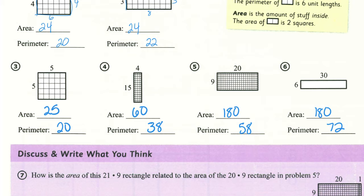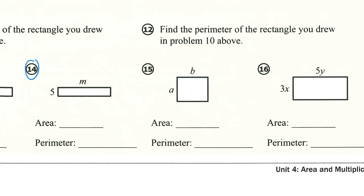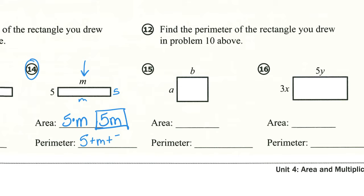Check your work on three through six to make sure that you got all those areas and perimeters correct. If you have questions, make sure you're asking. Now we're going to start with number 14. We have a variable here instead of the length of that side, but the process is still going to be the same. I'm going to take five times m to get the area, or in math we usually just write it as 5m — when those things are right beside each other, it means they're being multiplied. For my perimeter, I'm going to write it as five plus m plus five plus m, but I'm going to simplify it. I have two fives, that ends up being 10, and I have two m's, so that ends up being 2m, and I would just leave it like that.